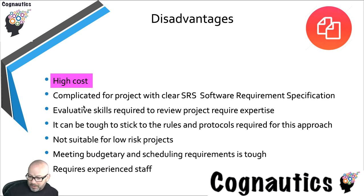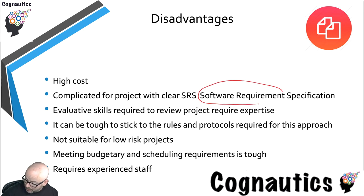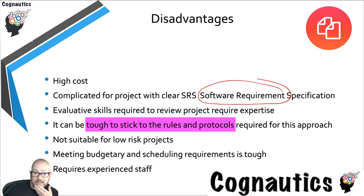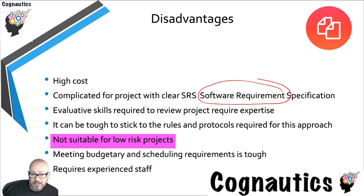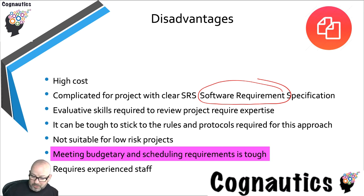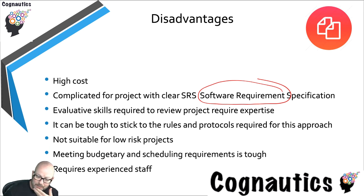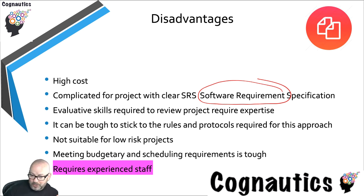Just like the spiral, project estimates become easier to make as the project moves through to fruition. It's high cost if you know the software requirements in advance — there'd be no point in using this methodology. Sticking to the rules can be exceptionally tough because it's so fluid and it can be quite easy to come off track. It's not suitable for low-risk projects — it would be a waste of resources. It's difficult to hit monetary targets, and it of course requires experienced staff who know what they're doing and are able to change direction at short notice.